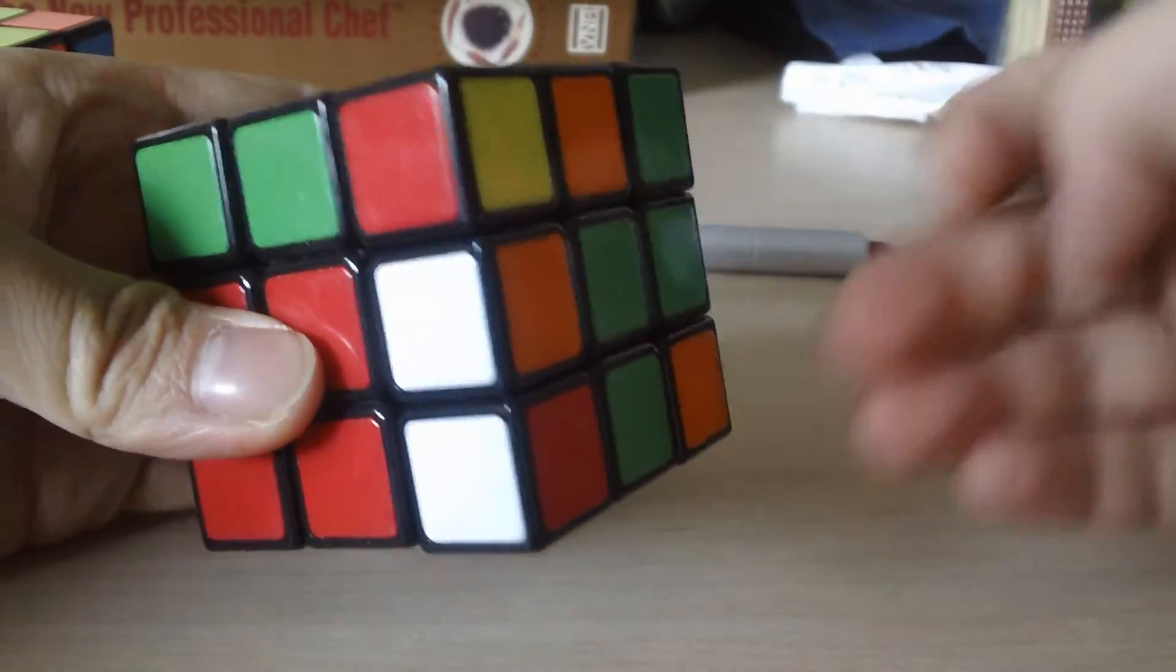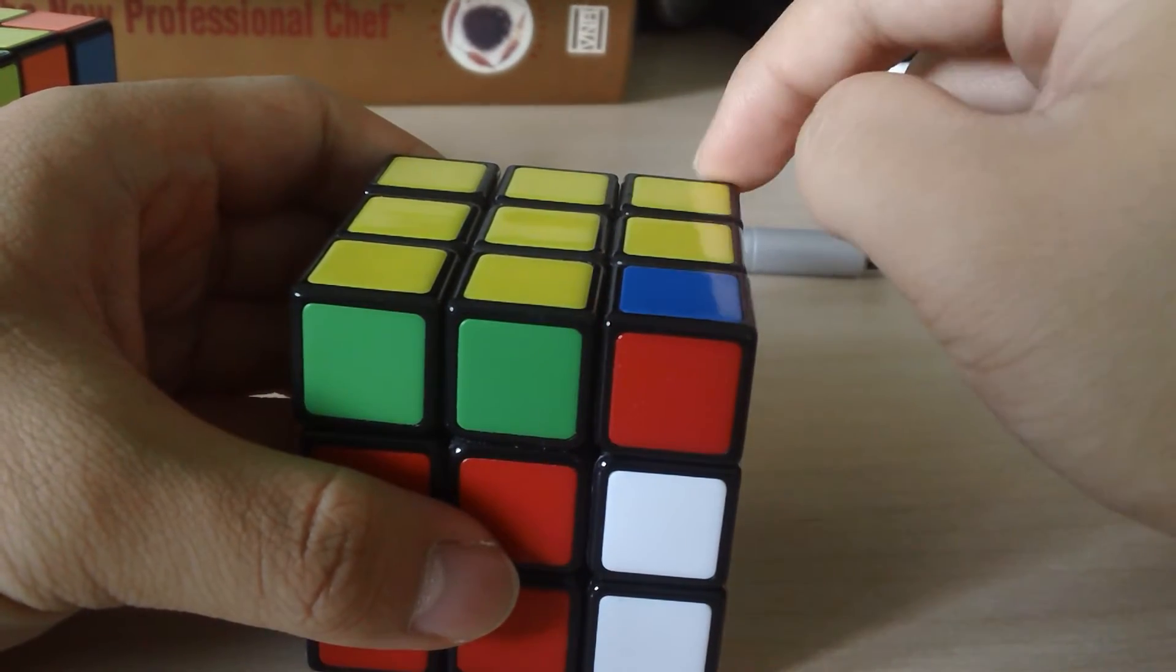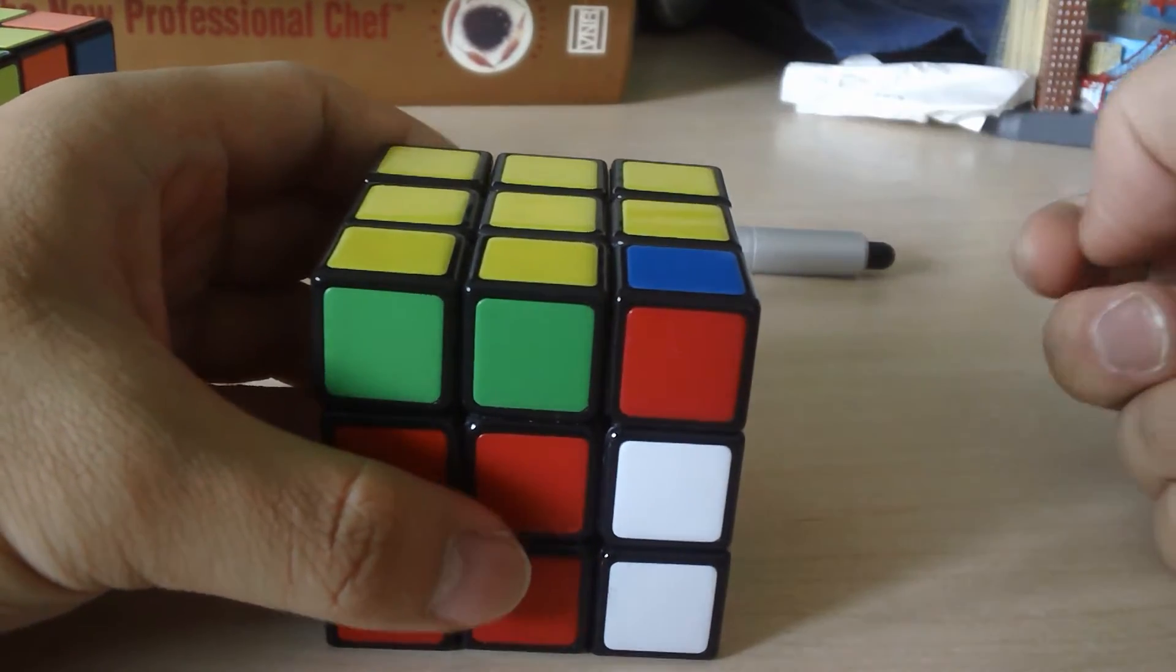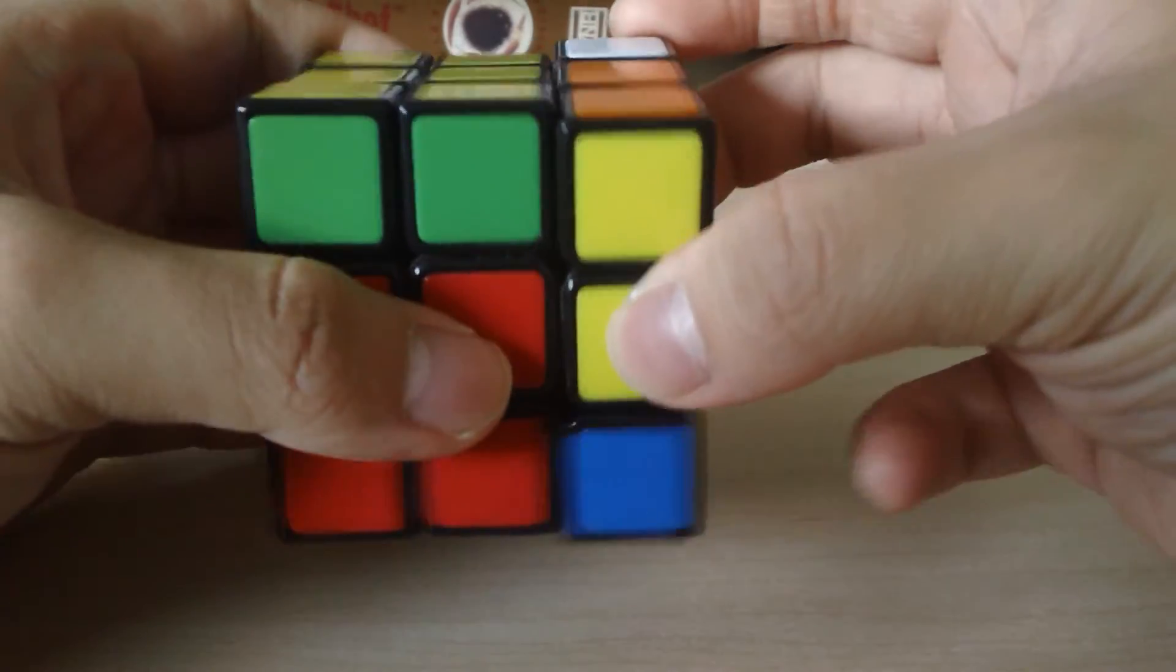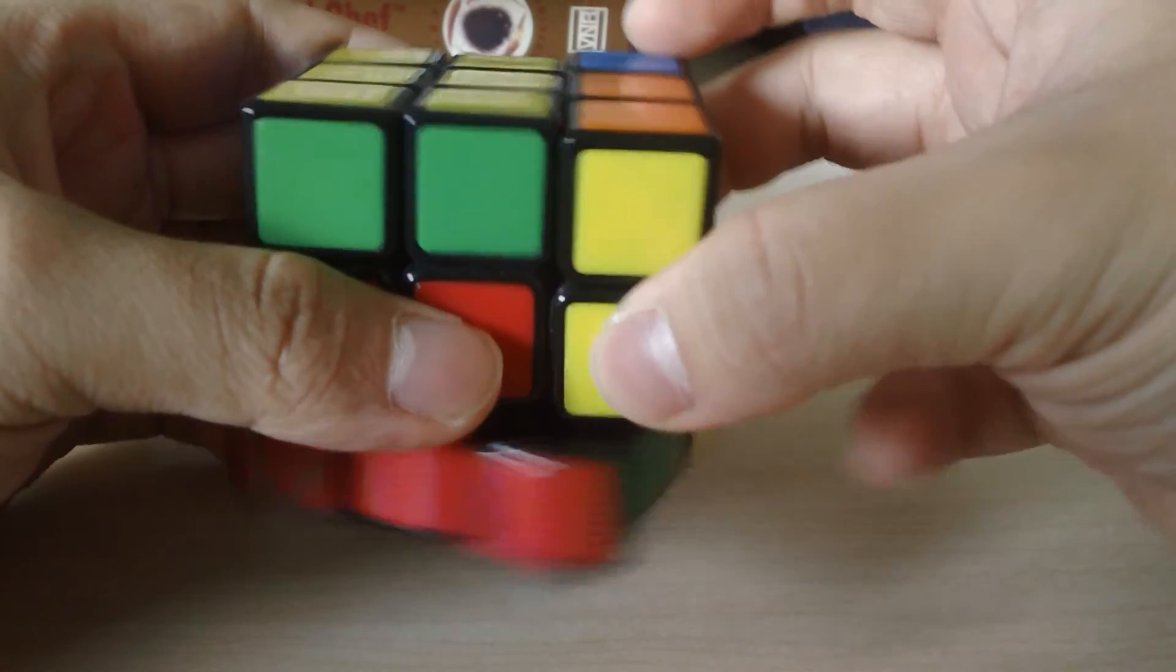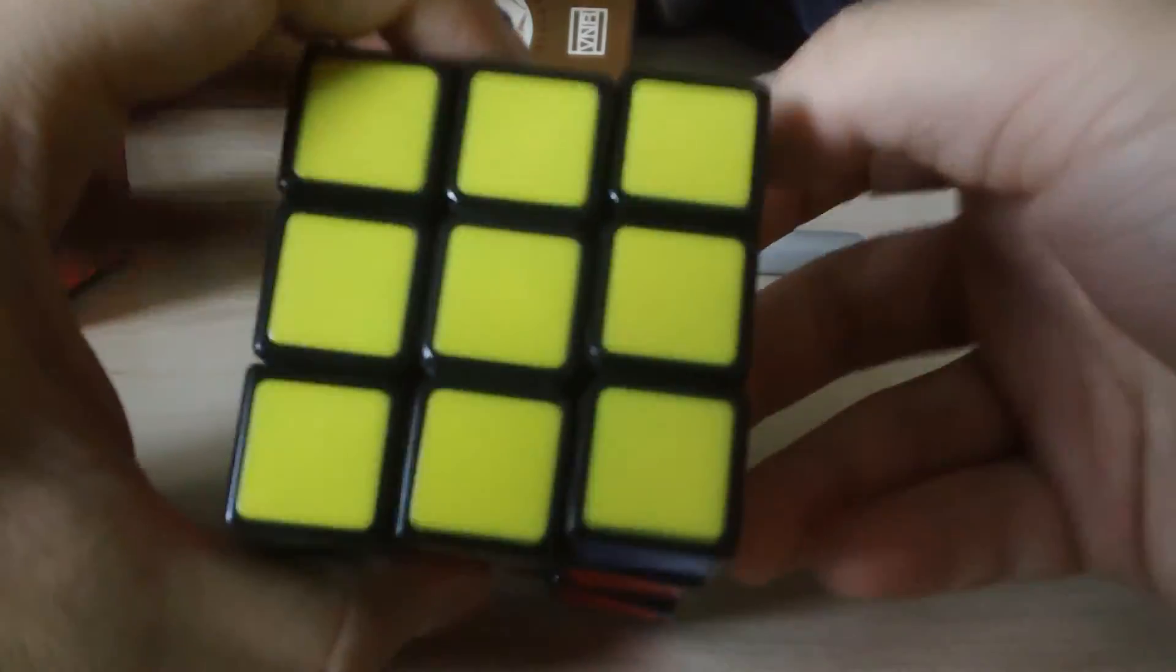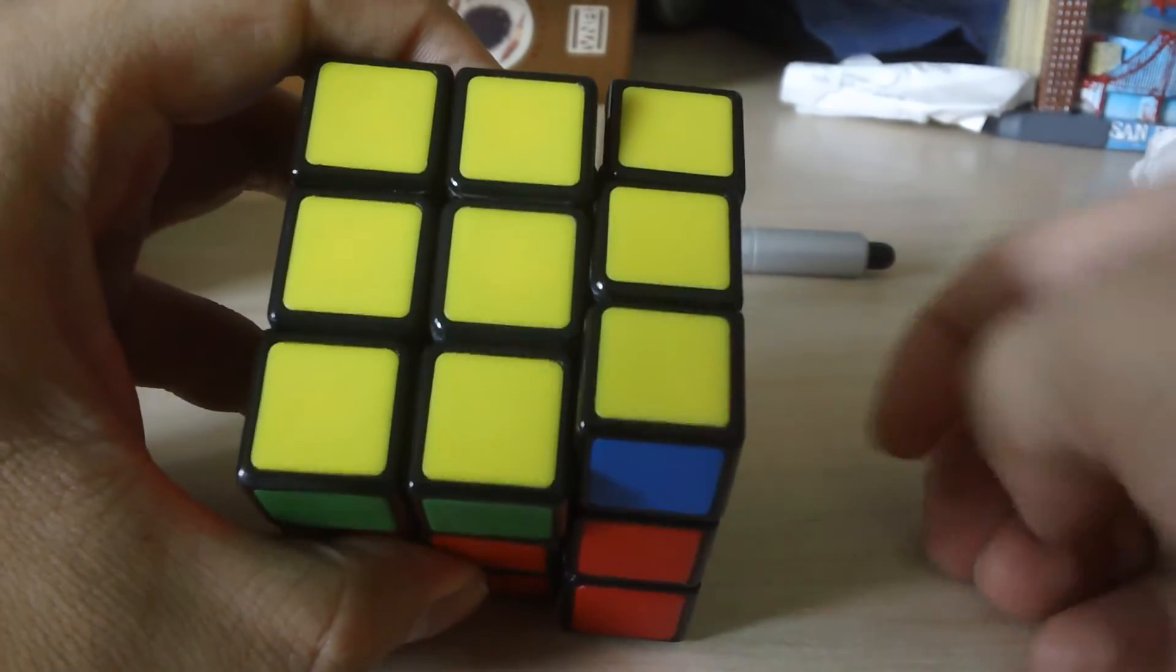And don't worry that this part's messed up. It will get fixed. If it doesn't, you messed something up. So we apply the algorithm again. Down, over, up, over, down, over, up, over. And now, everything should be yellow in this case.